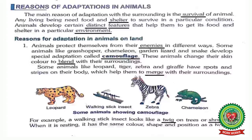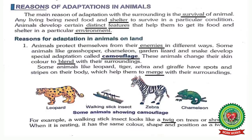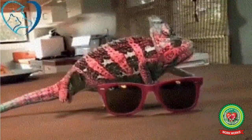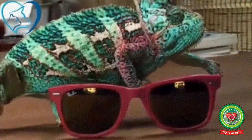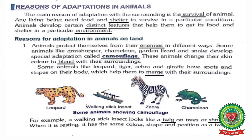Some animals like grasshopper, chameleon, garden lizard, and snake develop a special adaptation called camouflage. Underline 'camouflage' and write down its meaning: ability of an animal to blend with its surroundings. These animals change their skin color to blend with their surroundings. Underline 'blend' — meaning to mix with another substance. Animals like chameleon and garden lizard change the color of their skin so it matches the surrounding, protecting themselves from enemies.